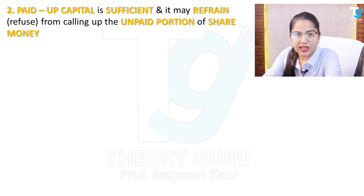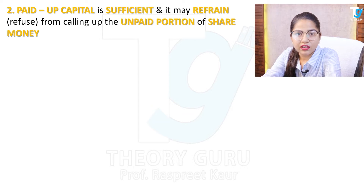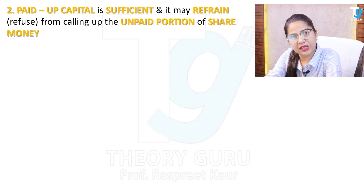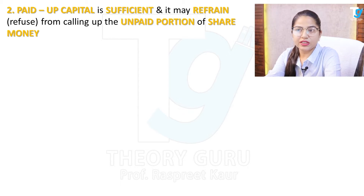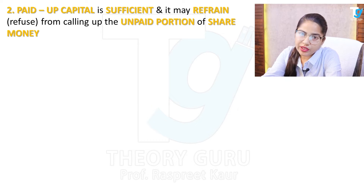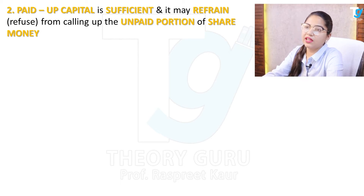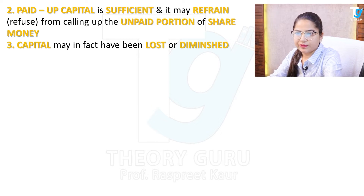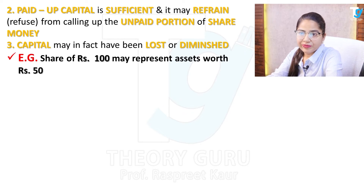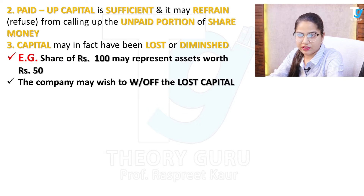For example, one share is for 10 rupees. The company has called up 8 rupees, which is the paid-up capital. The remaining 2 rupees is unpaid and sufficient — so paid-up capital is sufficient. The last reason is that capital is diminished or lost. If the share was previously 100 rupees but is now only 50 rupees, you need to write it off, and to write it off you need to reduce capital.